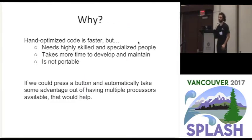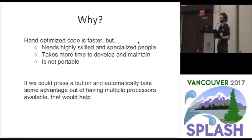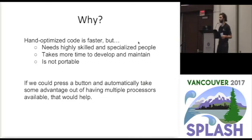We want to do that automatically. Hand-optimized code is usually faster, however it requires a knowledgeable person, takes time and effort, and is not portable — if you want to change the architecture or run your program on different architectures, your optimizations might not work as well. So if you could have a compiler procedure that does optimization taking the architecture into account, that would help the average programmer make use of heterogeneous architectures, which are ubiquitous today — we all have smartphones with CPUs, GPUs, sometimes multiple CPUs.